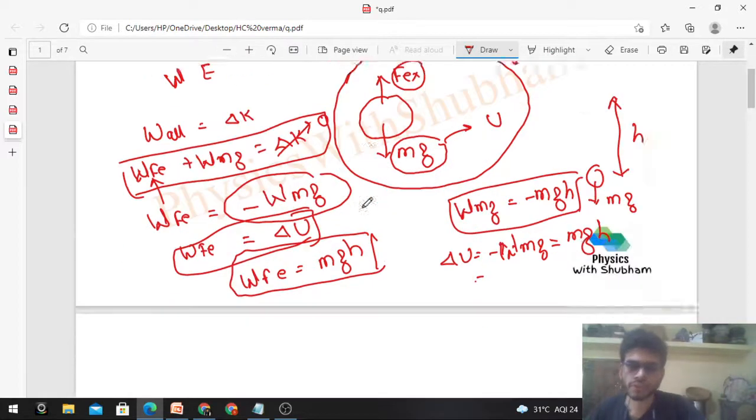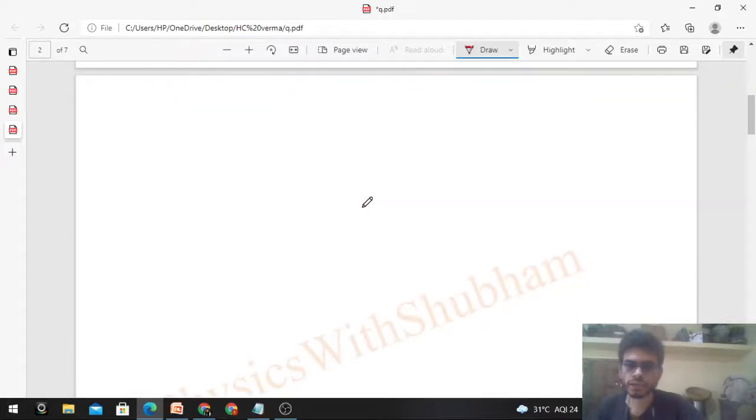If you want to use conservation of mechanical energy, the opposite case would be: if this box falls from some height h from the almirah, then how many forces are acting? Only one force - mg, because of the weight. It falls downward. Then you can use conservation of mechanical energy, because the only force acting on the box is mg, for which we have defined potential energy, which is gravitational potential energy.